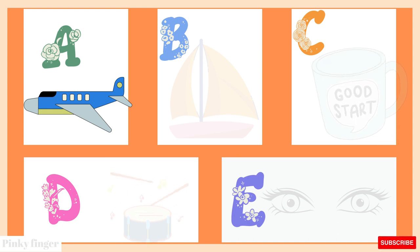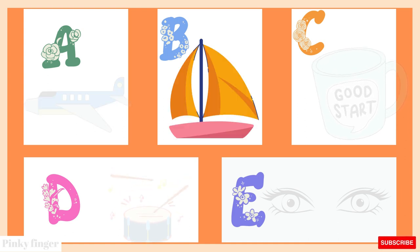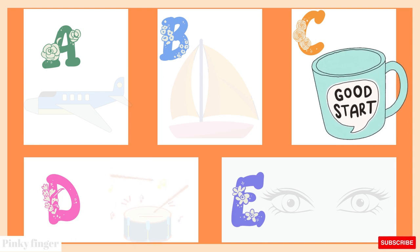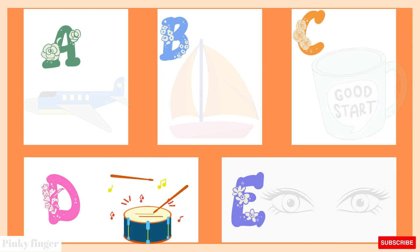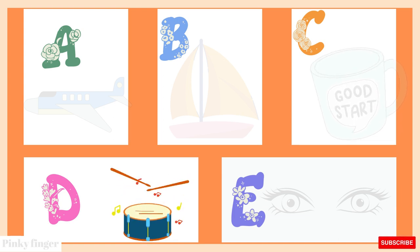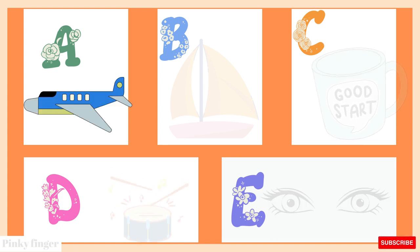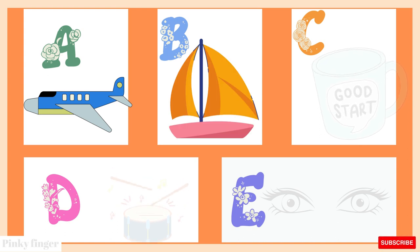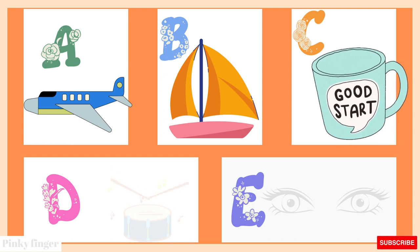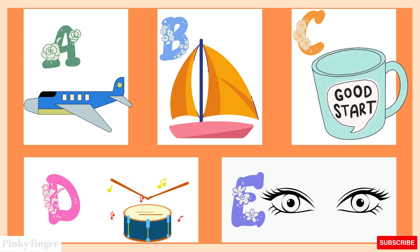A is for Aeroplane. Aeroplane. B is for Boat. Boat. C is for Cup. Cup. D is for Drum. Drum. E is for Ice. Ice. A is for Aeroplane. B is for Boat. C is for Cup. D is for Drum. E is for Ice.